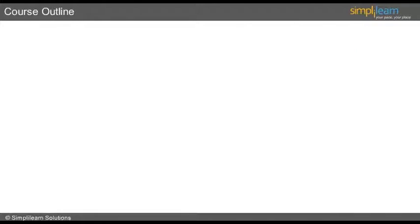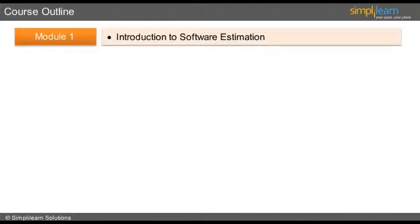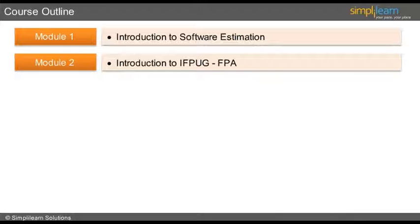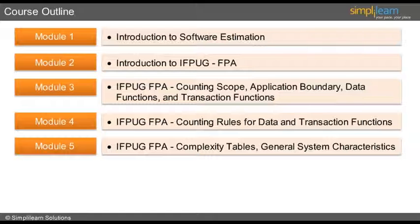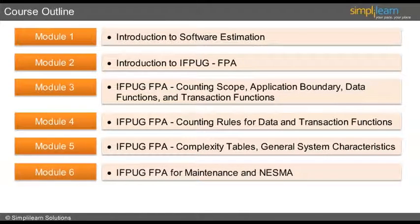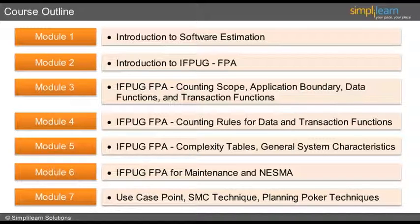This course consists of seven modules. We will start with an introduction to software estimation, followed by an introduction to IFPUG FPA. Modules three, four, and five cover the components and counting rules of IFPUG FPA in detail. Module six covers IFPUG FPA estimation for enhancement projects and a detailed course on NESMA technique. The last module covers Use Case Point (UCP), Simple Medium Complex (SMC) technique, and Planning Poker techniques used in agile projects. The entire duration of the course is two days.